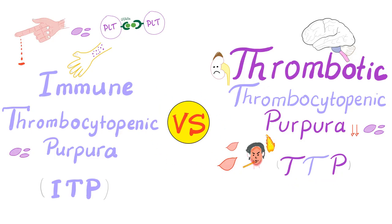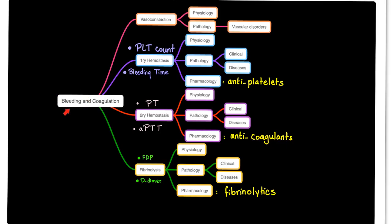By the way, on my channel, I have a playlist called Comparisons, where we compare between different medical conditions — it's one of the best ways to memorize ever. As you know, bleeding and coagulation, or hemostasis, consists of four steps: vasoconstriction, primary hemostasis, secondary hemostasis, and fibrinolysis.